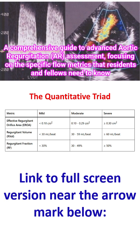Effective regurgitation orifice area less than 0.1 cm² is mild, 0.1 to 0.29 cm² is moderate, and 0.3 cm² or more is severe. Regurgitation volume less than 30 ml per beat is mild, 30 to 59 ml per beat is moderate, and 60 or more ml per beat is severe. Regurgitation fraction less than 30% is mild, 30 to 49% is moderate, and 50% or more is severe aortic regurgitation.